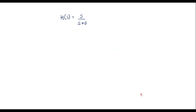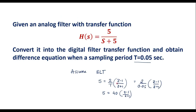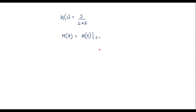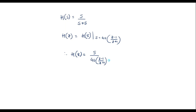We now convert this into the digital filter. The digital filter transfer function H(Z) is obtained from H(S) by replacing S with 40 * (Z minus 1) divided by (Z plus 1). Therefore H(Z) equals 5 divided by [40*(Z-1)/(Z+1) + 5].